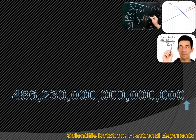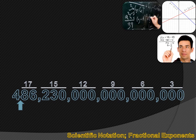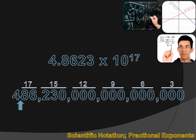How far are we moving the decimal? We're moving it 3, 6, 9, 12, 15, 16, 17 spaces — we need to move the decimal 17 spaces. So to convert this to scientific notation, we write 4.8623 times 10 to the 17th power, because to get back to the original number we have to move this decimal 17 places to the right.